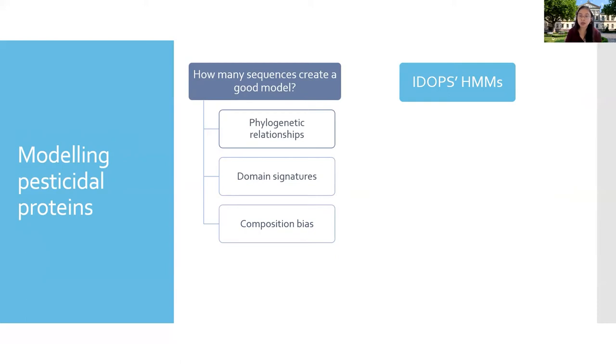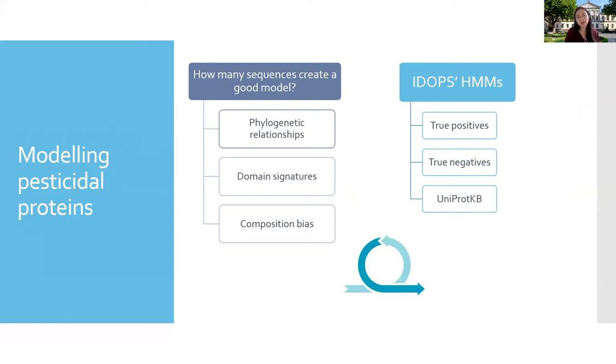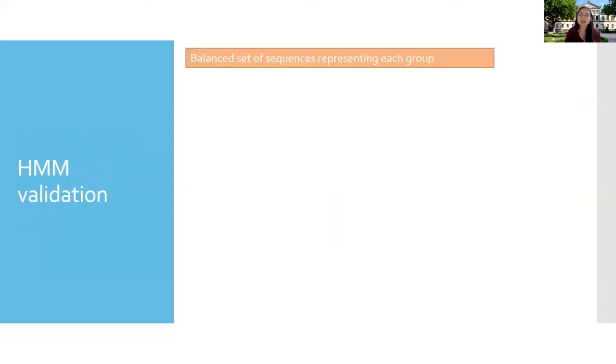Taking into account these ideas, every candidate model that we developed for IDOPS was tested against a collection of true positive sequences from the pesticidal protein resource center, a collection of true negatives, which was a collection of unrelated other pore-forming toxins from different bacteria. Finally, we tested the discriminative power of the models by scanning the whole Unipro database and analyzed the distribution of the matches that were returned. This was an iterative process, as many models require multiple rounds of refinement and testing.